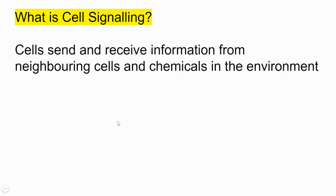We know that cells are constantly communicating with neighboring cells as well as chemicals in their environment. This behavior of cells to send and receive information from their neighboring cells and to interact with the chemicals in their environment is called cell signaling.